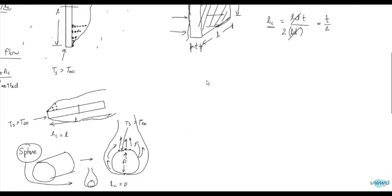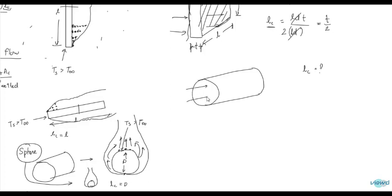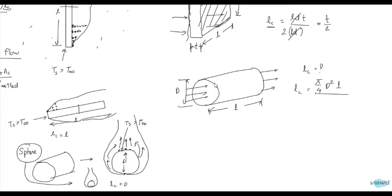Now consider a cylinder with diameter D and length L, where heat flows along the length. Lc equals the volume divided by the surface areas perpendicular to heat flow. Volume is (π/4)·D²·L. The two perpendicular surface areas are the two circular end faces, each (π/4)·D². After cancellation, Lc is equal to L/2 for the cylinder where heat flows along the length.